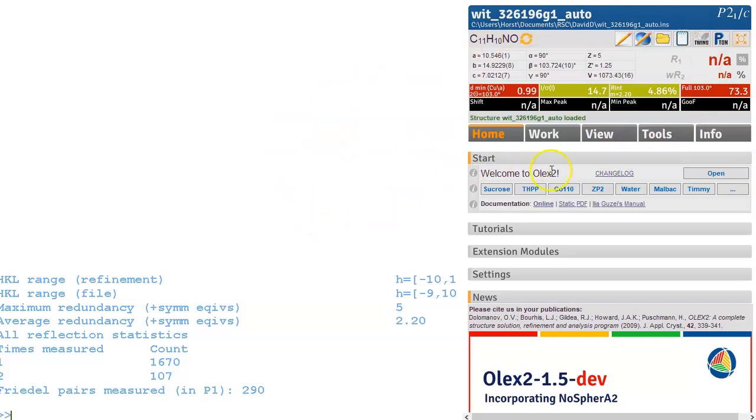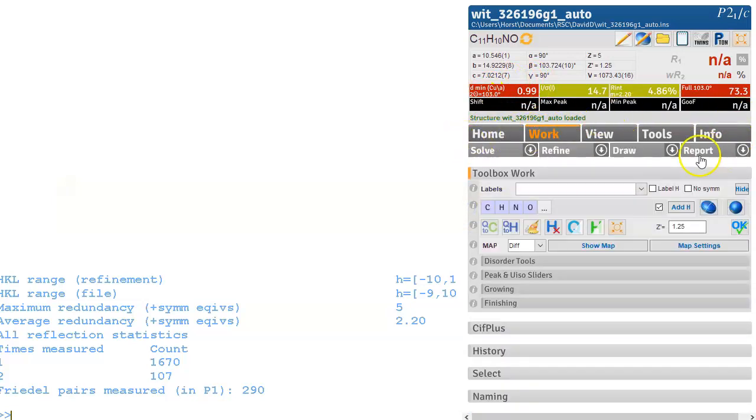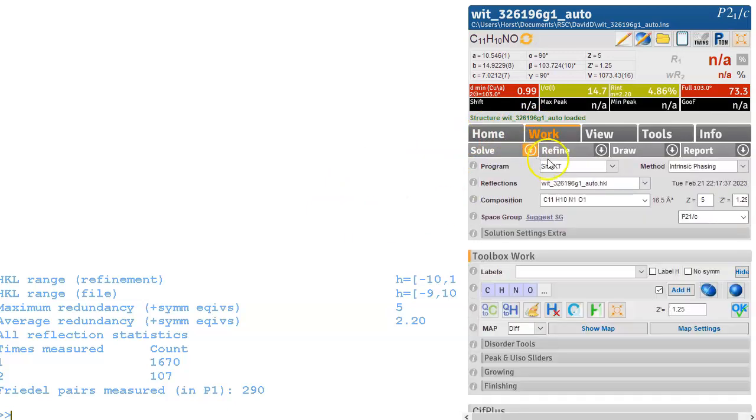So this is the latest dev version of Olex2 and you click on work. So this gives you the area where you can start working on things and the first thing we need to do is solve the structure, solve the phase problem and there's some structure solution programs available. So ShellXT is the one that is highly recommended and you can also use the built-in Olex2. If you don't see any of those other options and just have Olex2 then you need to link some crystallographic software to Olex2. There is some information about how to do this elsewhere.